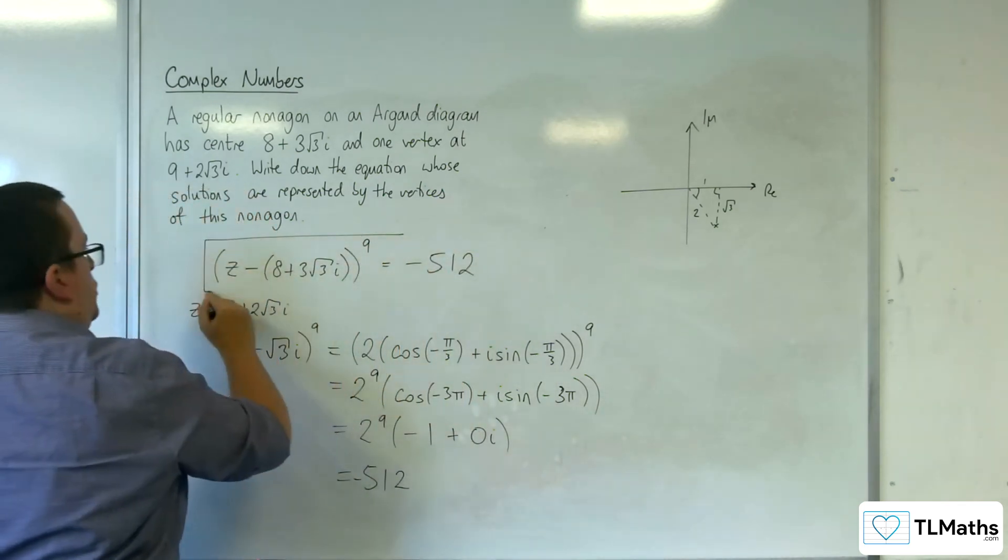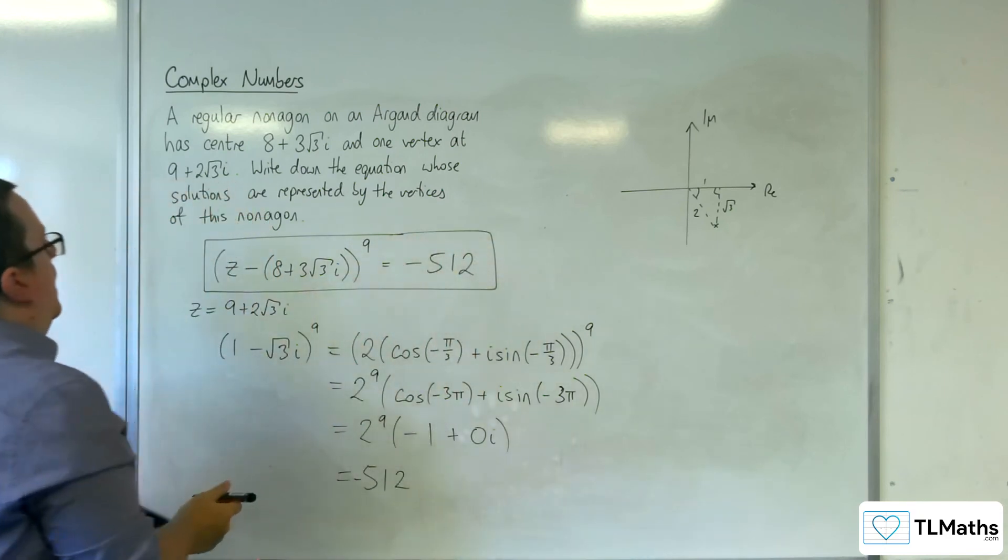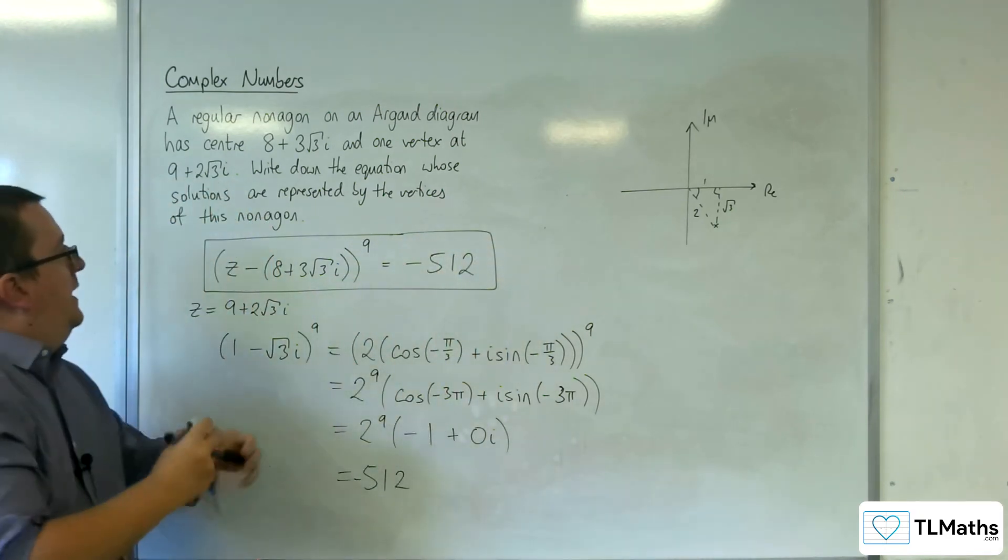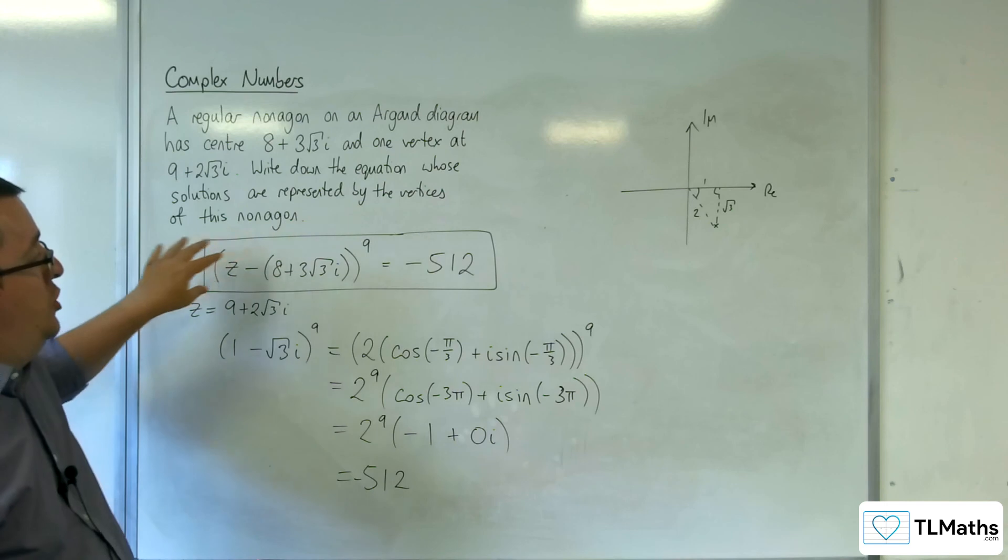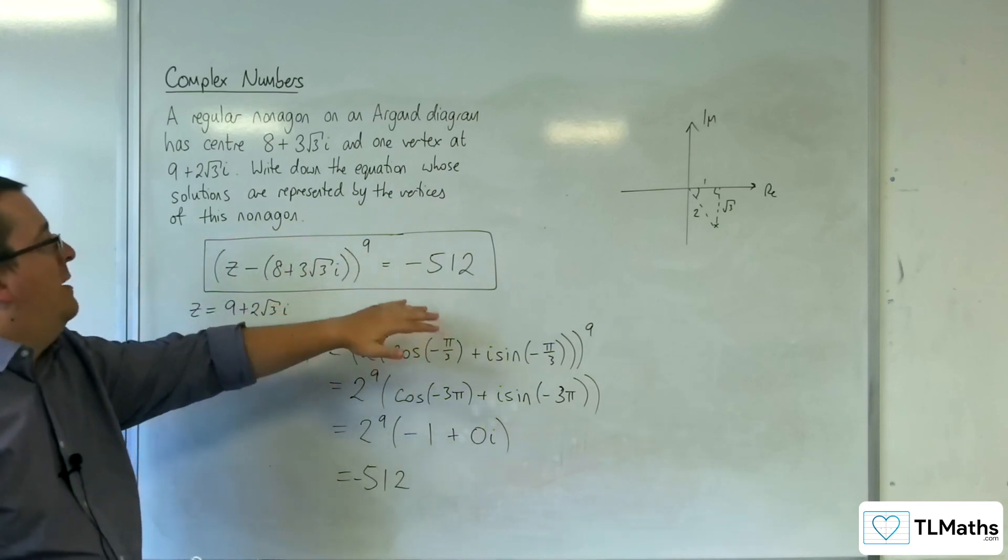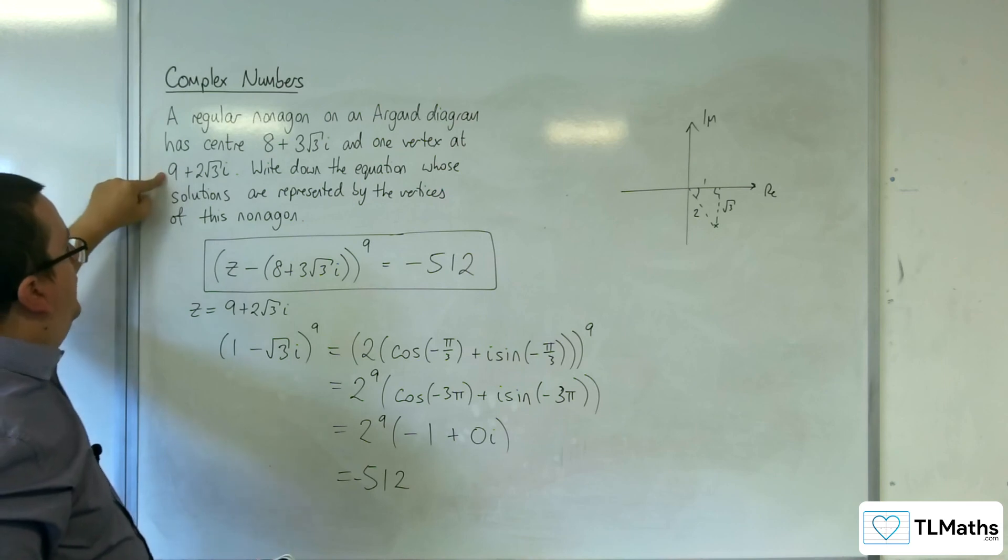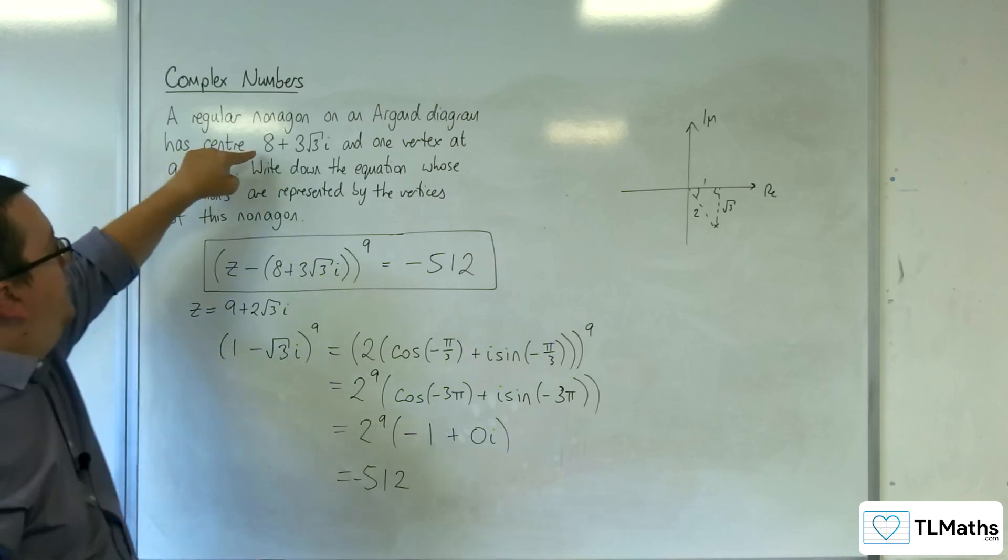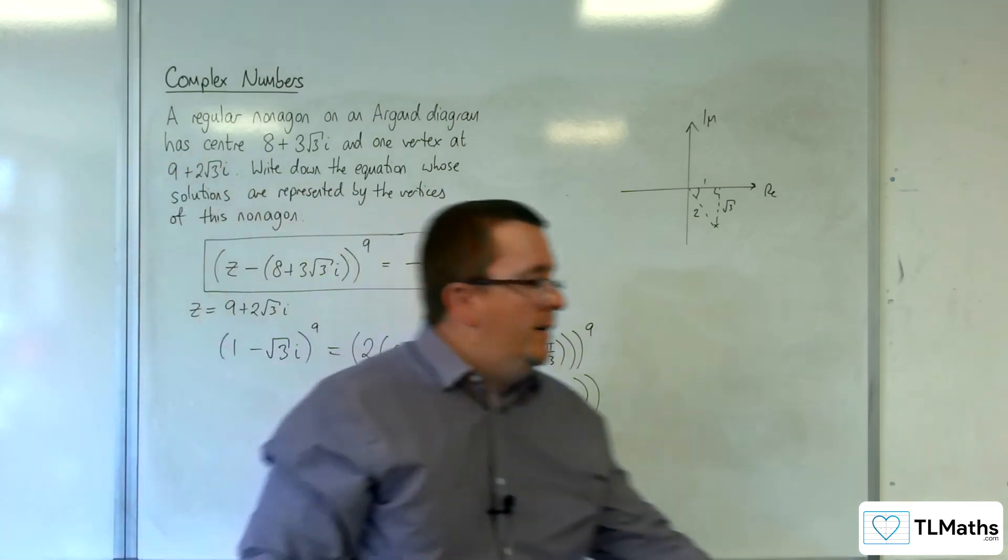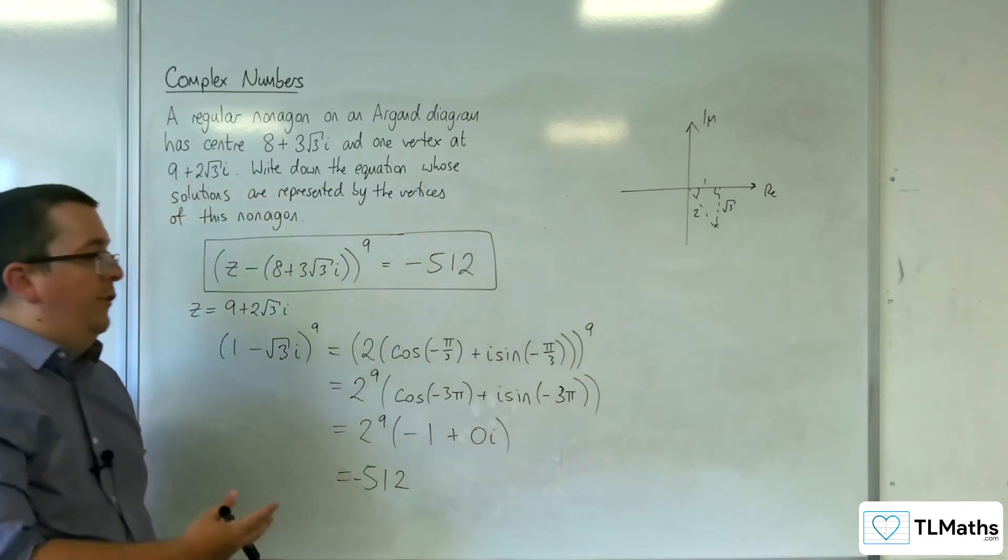So it is this equation that will have, it will be a nonagon, its solutions will form a nonagon on the Argand diagram, where one of the vertices is 9 + 2√3i, and it's centered at 8 + 3√3i. So that's how we can solve this problem.